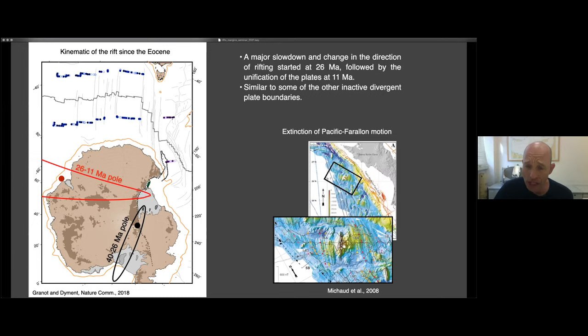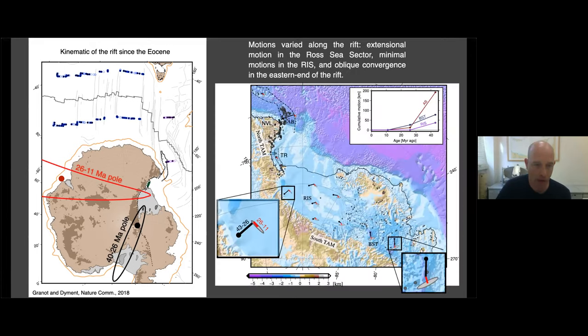And we see similar behavior prior to the cessation of motion on other divergent plate boundaries. For instance, west of Mexico, the Pacific-Farallon ridge has ceased. And just after the plate motion has been changing, the kinematic has changed. You can see that in the abyssal hill fabric and also the change in the orientation of the magnetic anomalies. So it seems to be a process common to other places where the plate boundaries stop being active.